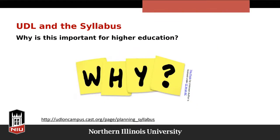So what does this have to do with the syllabus, and why is this important for higher education? As I mentioned, the syllabus gives a first impression about what to expect from the upcoming learning environment. This is students' very first impression of you and of the course, and you want that to be a good impression. It's also an opportunity to set the class climate, identify specific learning expectations, discuss options and accessibility, and share with students that you have accessibility in mind. Here is a syllabus planning resource for you on UDL.